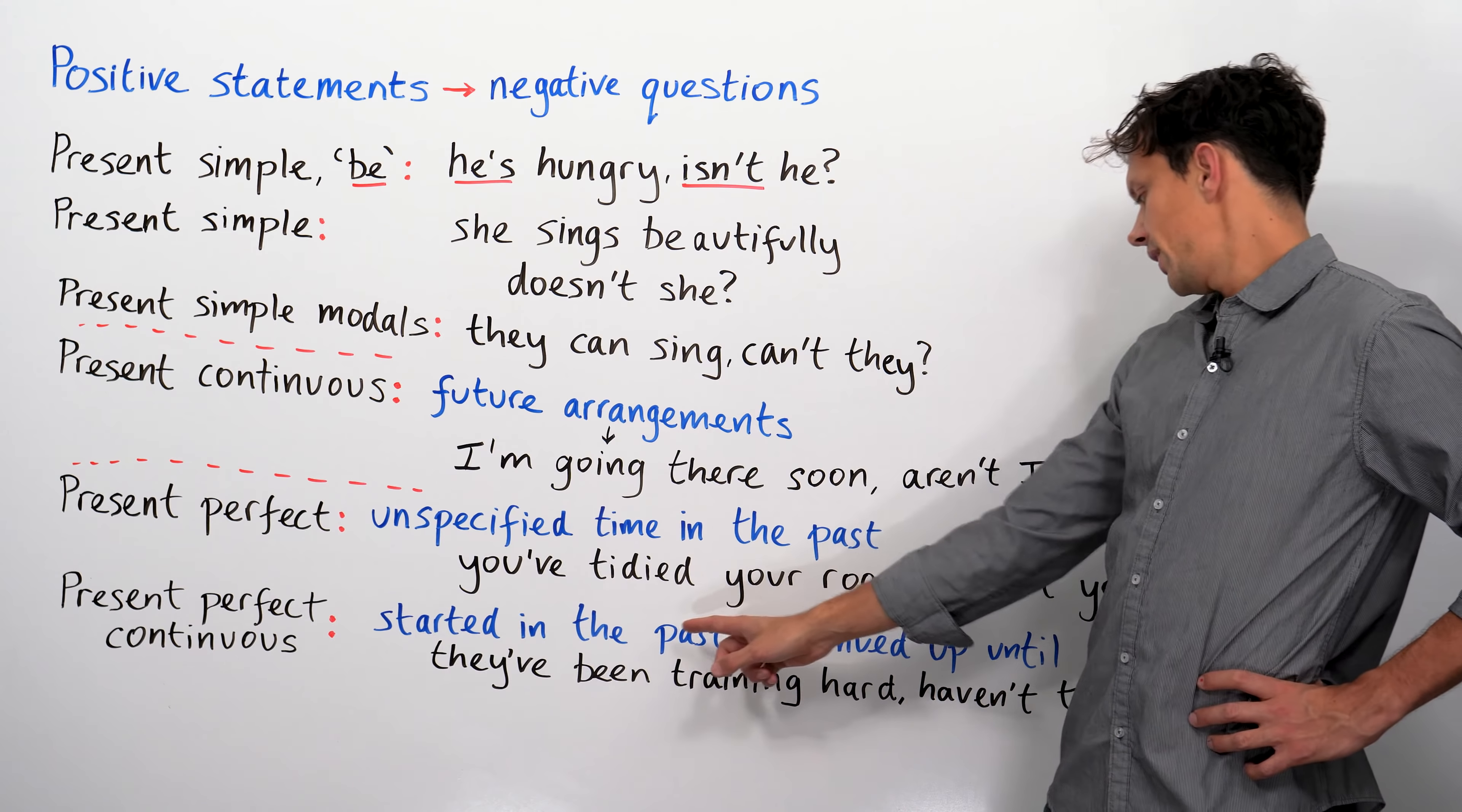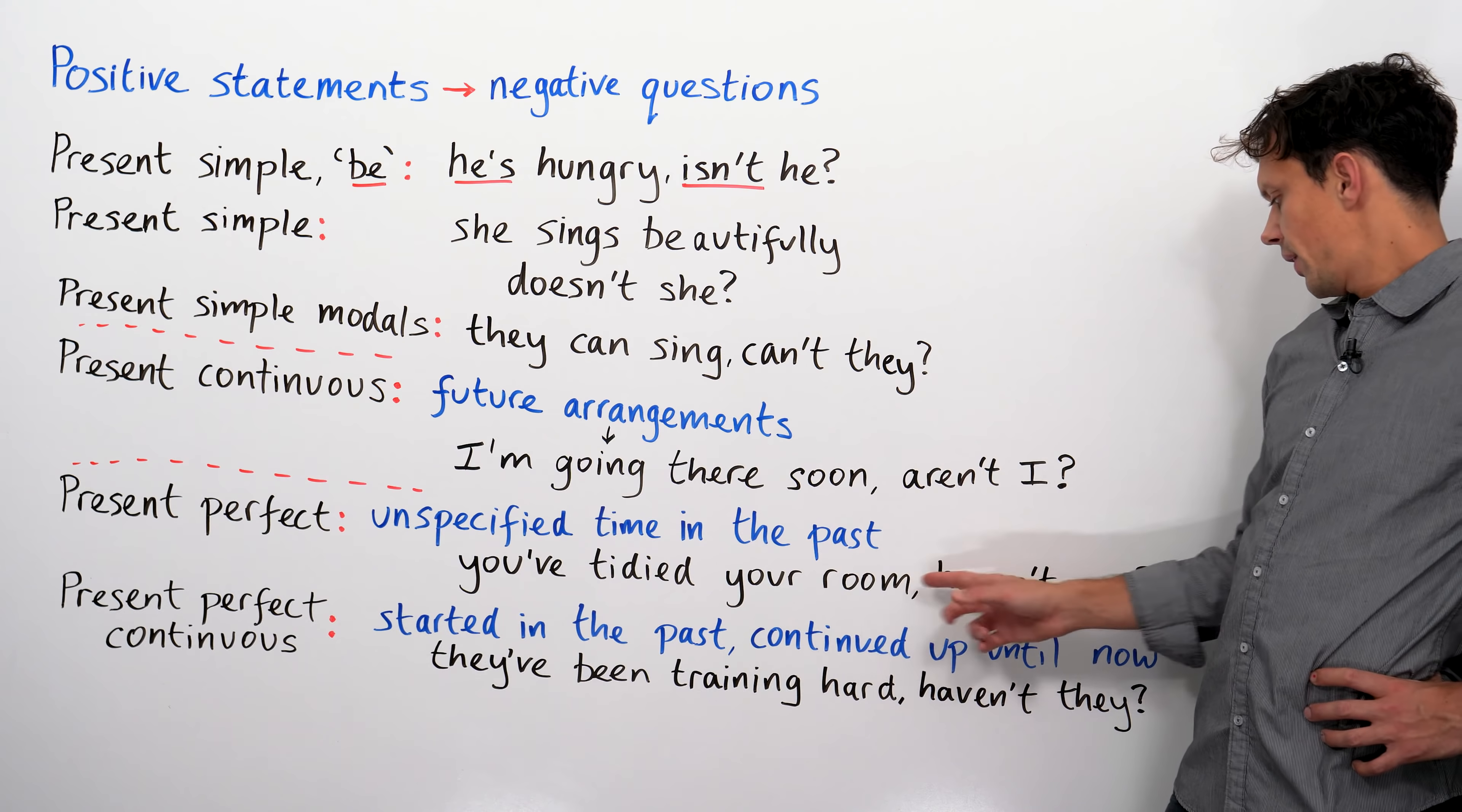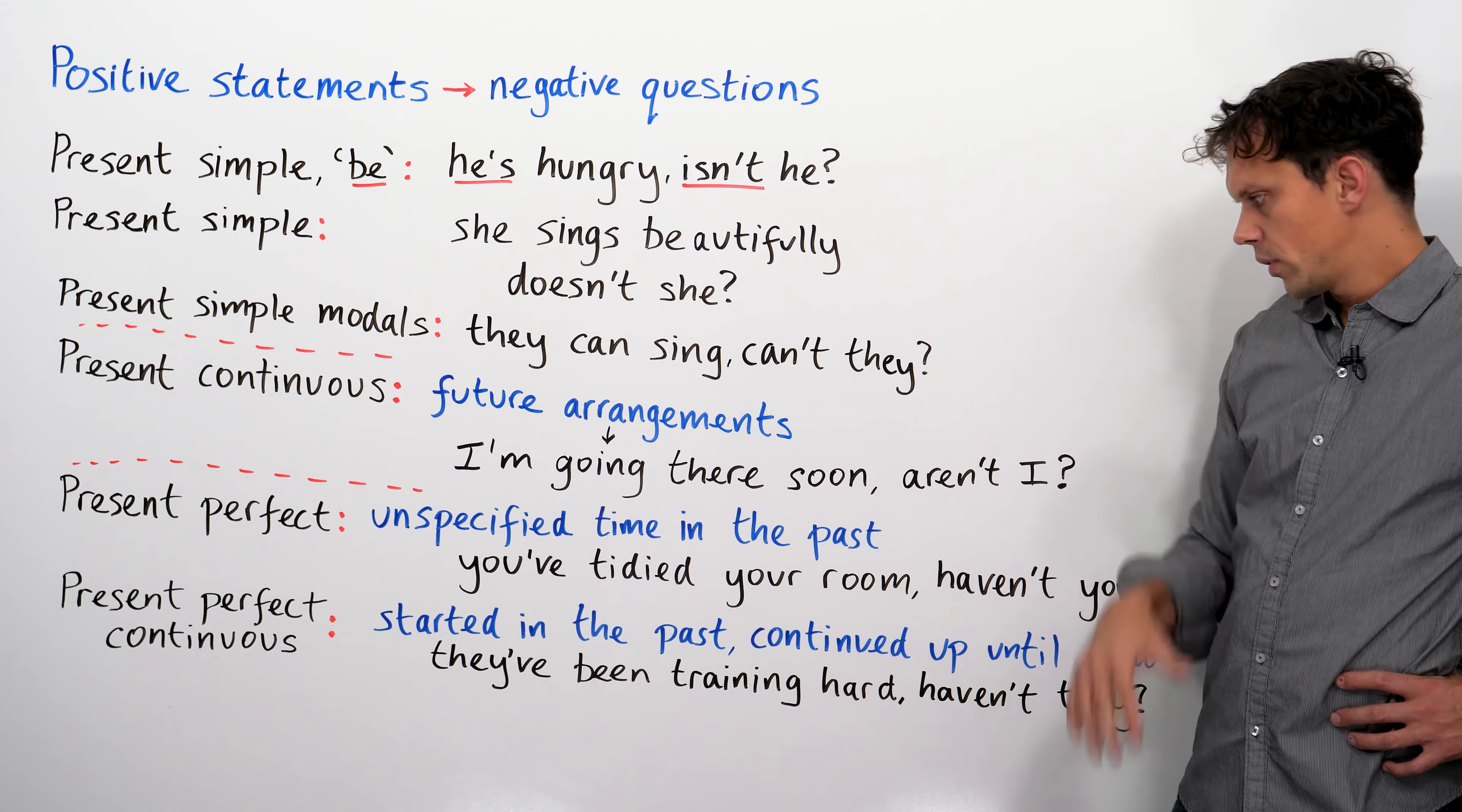Using have with past participle. You've tidied your room, haven't you? I've done well, haven't I? They've completed the race, haven't they?